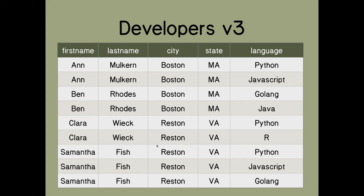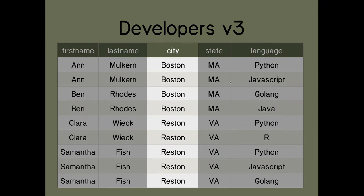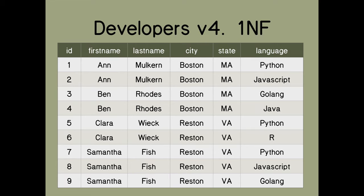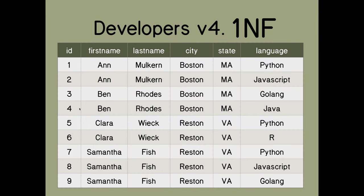Looking at our data, we don't have any unique column — we have multiple rows with the same names and other repeated values, so there's nothing unique about each row unless we took the whole row. The solution is to create a new field called ID that's unique. Each value in that ID field is unique — that's the primary key. So this table is now in 1NF: the information is atomic and each row has a unique primary key.